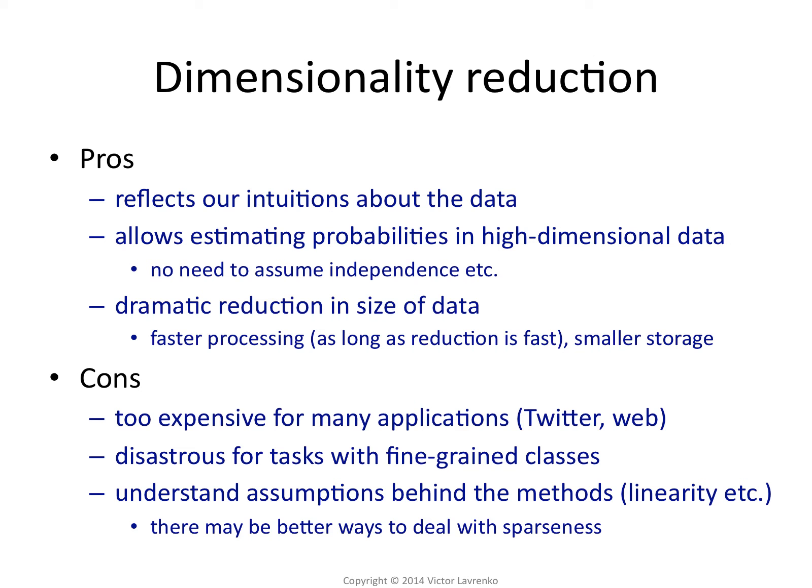And you can observe that very easily. If you take some data which was correlated and you run Naive Bayes on it, it's going to perform horribly, because Naive Bayes can't deal with correlated data. You pipe that data through PCA, and all of a sudden, Naive Bayes is going to be one of your best classifiers. The reason is that PCA has rotated the space so that the data is no longer correlated, so the independence assumption now holds. You've made it hold by turning the data around.